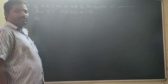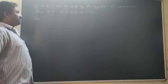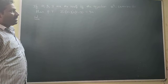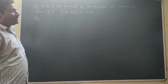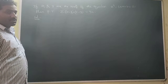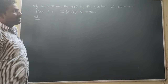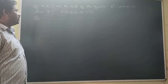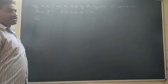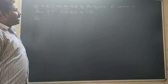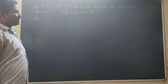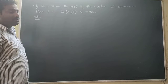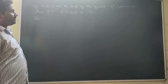Hi friends, see this problem: if alpha, beta, gamma are the roots of the equation x³ - 3x + b = 0, then prove that summation of (alpha - beta)(alpha - gamma) = 9b.